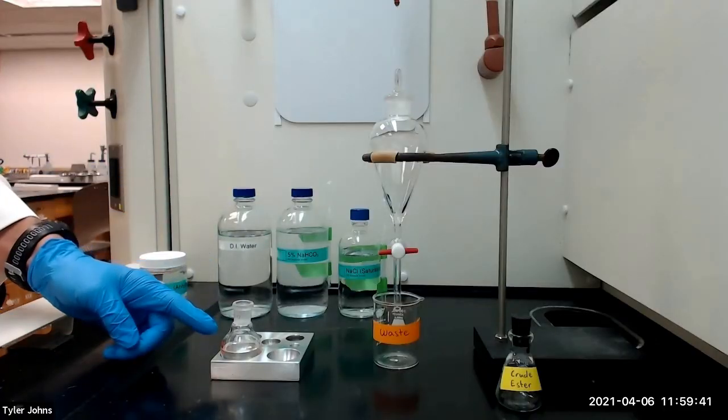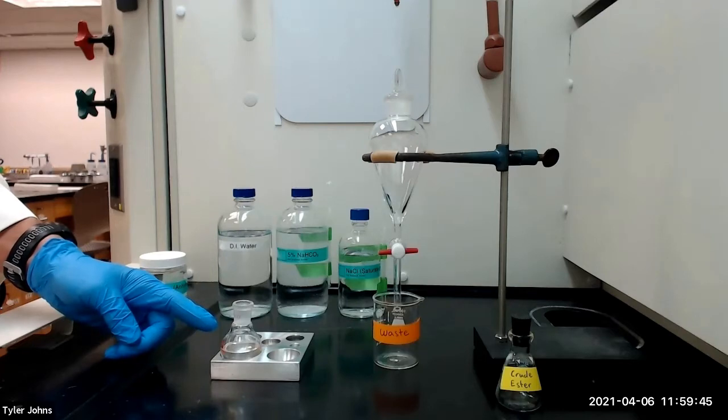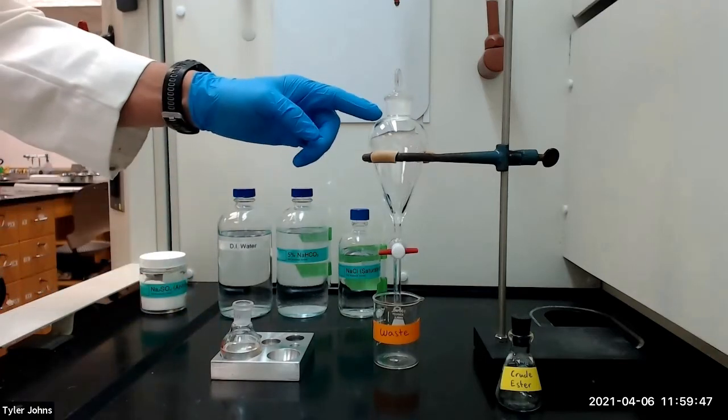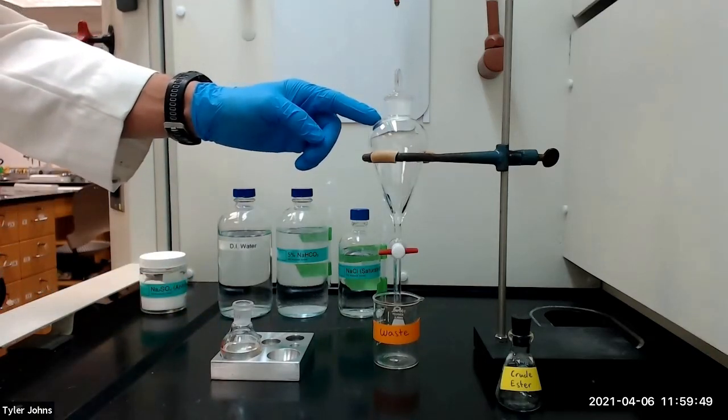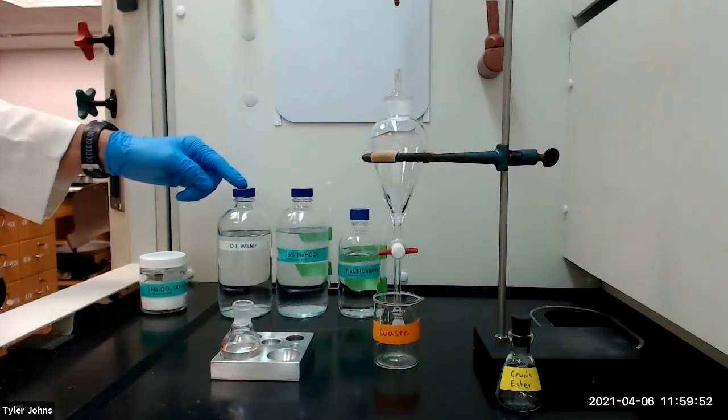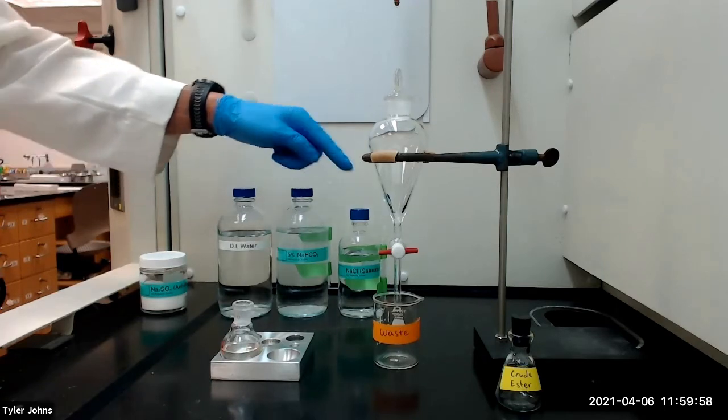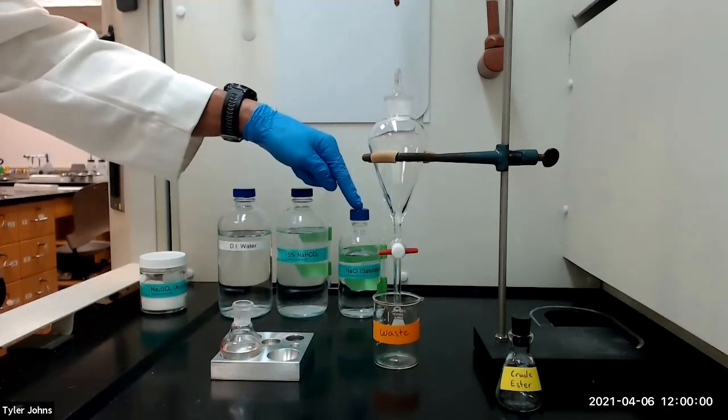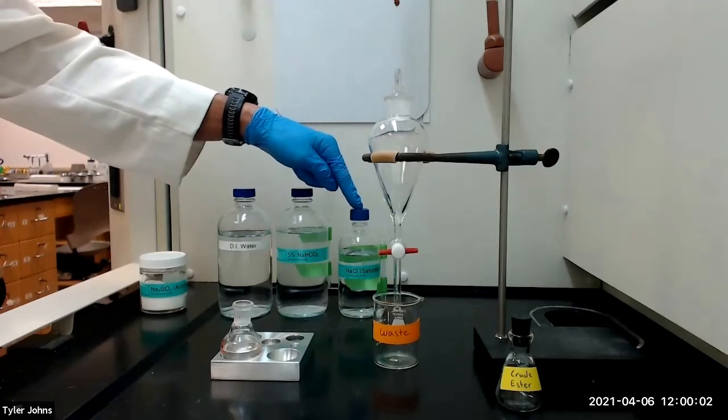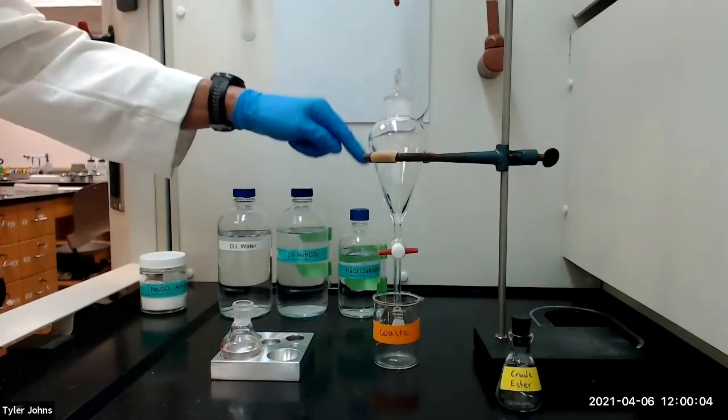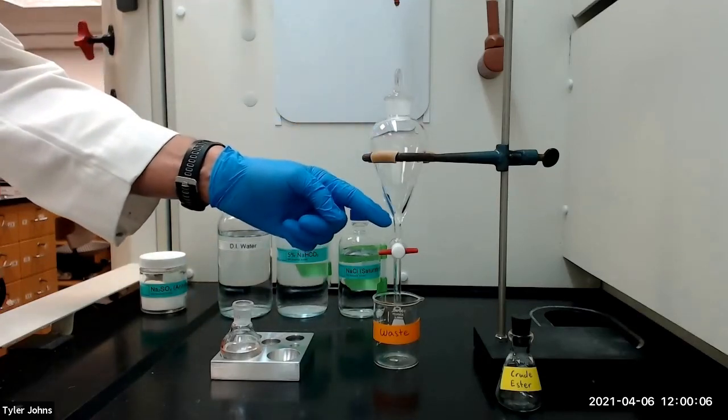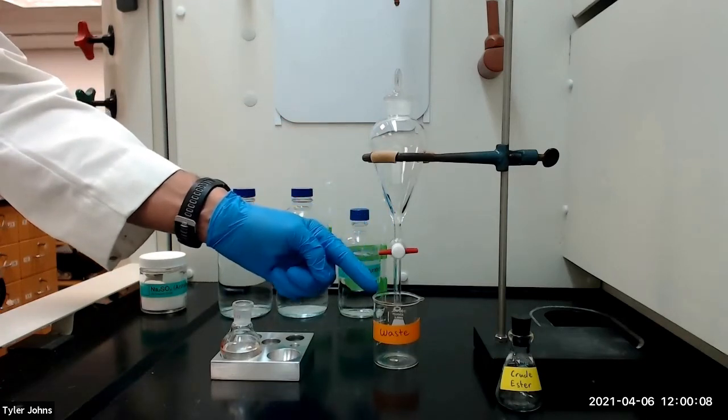After the reaction mixture has cooled, we will next perform an extraction. We will transfer the reaction mixture to a separatory funnel and extract the organic layer three times using 10 milliliters of deionized water, then 5 milliliters of 5% aqueous sodium bicarbonate solution, and finally 5 milliliters of saturated aqueous sodium chloride solution. After each extraction, we will drain the lower aqueous layer through the stopcock into a waste beaker.